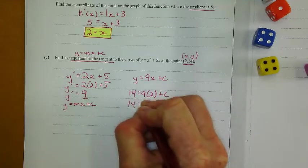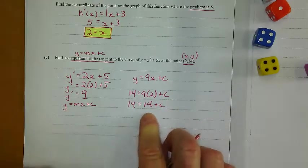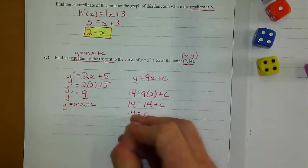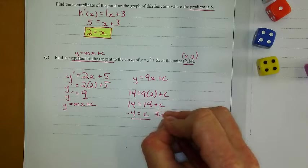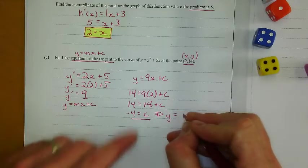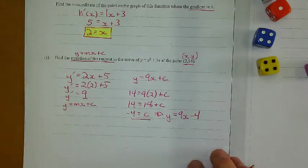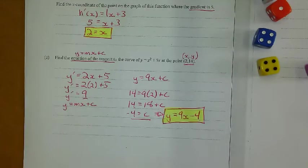So 14 equals 18 plus c. So if I subtract 18 from both sides, it looks like c is going to give me negative 4. All right, so then my equation, my final equation is y equals 9x minus 4.